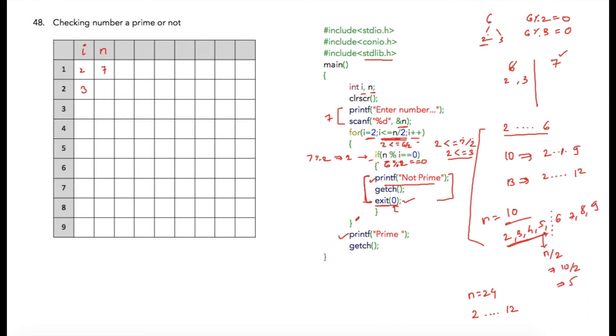And then i will be incremented to 4. But condition for 4 will not be true because we are checking 4 less than or equal to n by 2, that is 7 by 2, and we have checked it over here, it is 3. So condition is 4 less than or equal to 3, which is a false condition. Hence the for loop will get terminated, and compiler will print that it is a prime number, and that will complete your program.